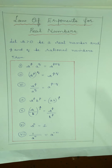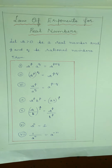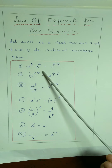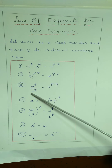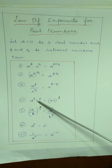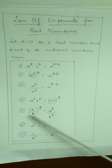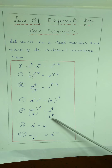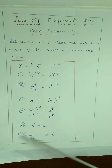In number systems, we have the extended Law of Exponents for Real Numbers as follows: a to the power p into a to the power q is equal to a to the power p plus q. a to the power p whole to the power q is equal to a to the power p into q. a to the power p divided by a to the power q is equal to a to the power p minus q. a to the power p into b to the power p is equal to ab whole to the power p. Then a by b whole to the power p is equal to a to the power p by b to the power p. Then a to the power 0 is equal to 1. And 1 by a to the power n is equal to a to the power minus n.